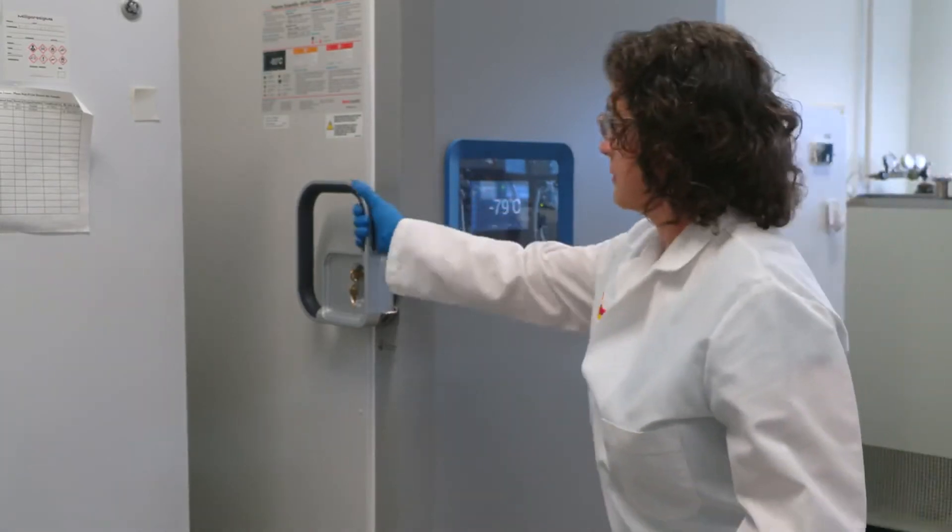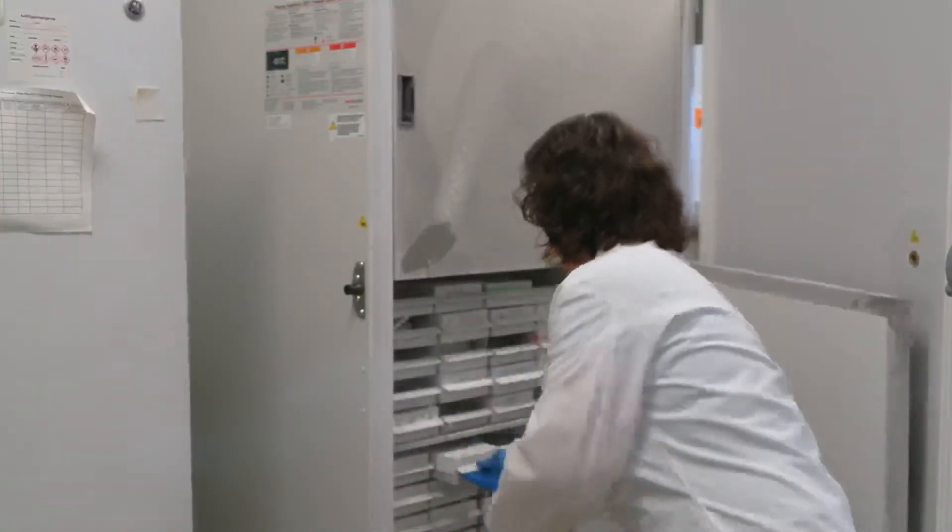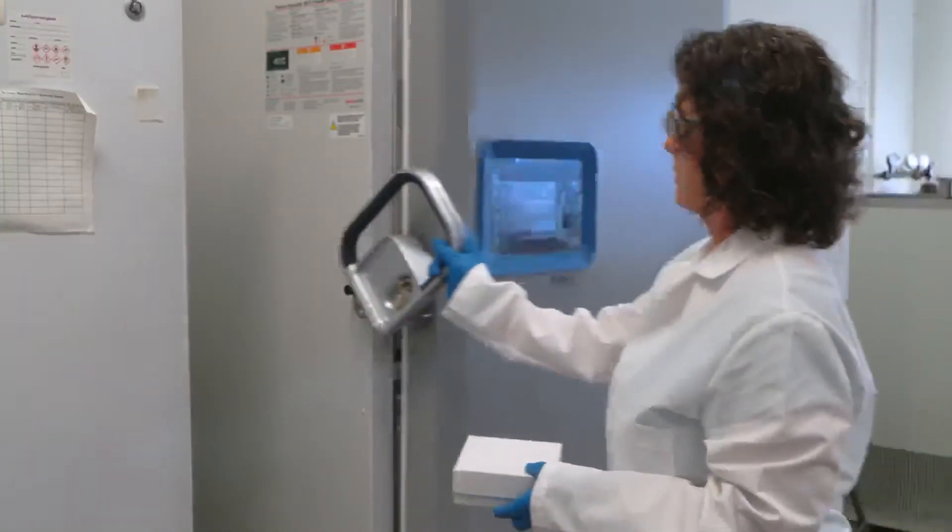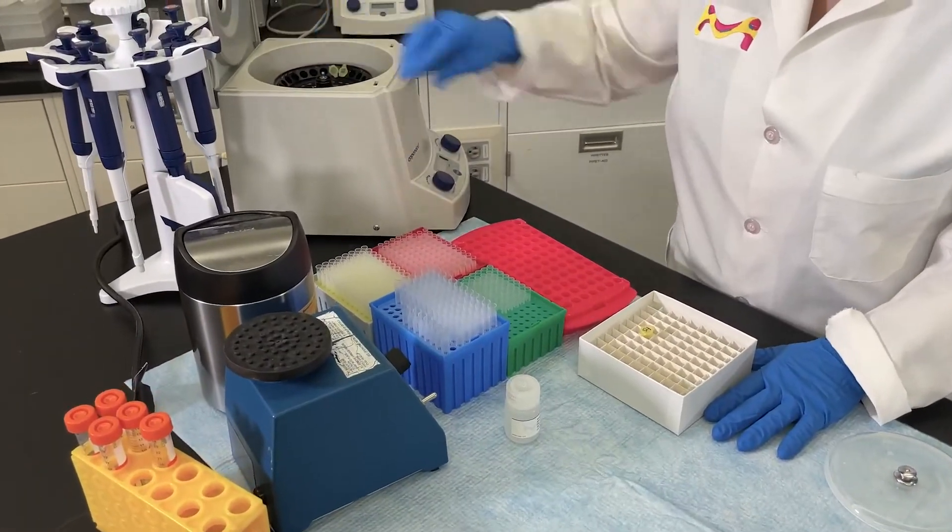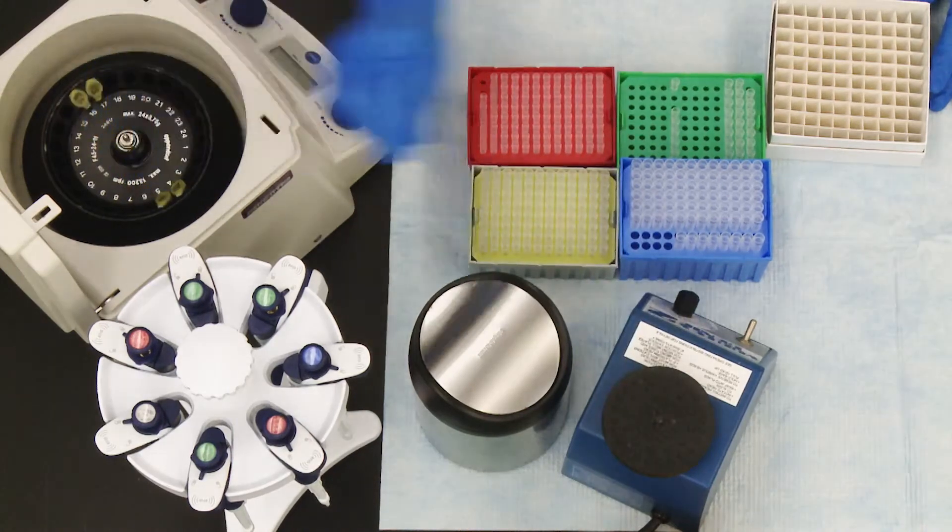After serum or plasma samples are separated, they can be assayed immediately or the samples can be aliquoted and stored at minus 20 to minus 80 degrees Celsius. Vortexing after thawing is recommended for a homogenous sample followed by centrifugation to reduce the possibility of bead aggregation.